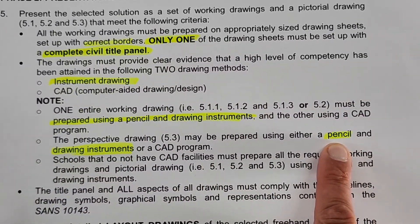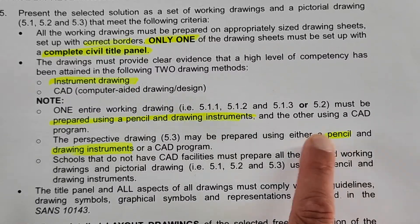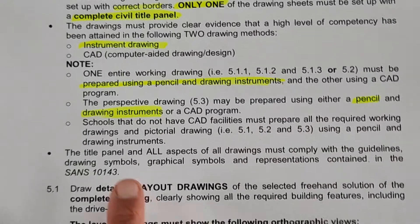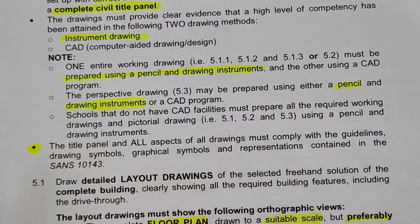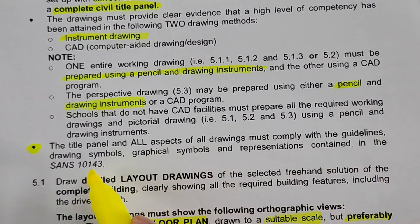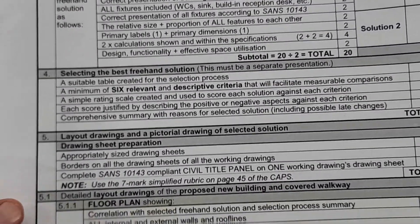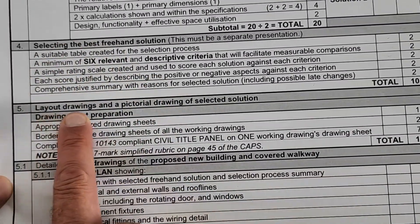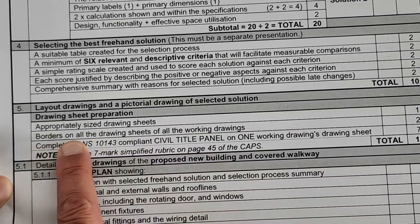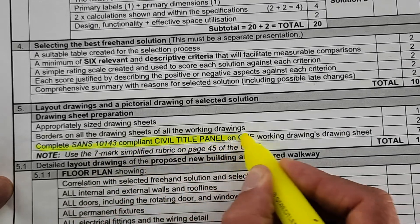We're doing everything in pencil for a couple of reasons: we don't have CAD at the school, and secondly, what are you going to get in the final exam? A pencil exam. Schools that do not have CAD must do everything in pencil. The title panel and all aspects of all drawings must comply with the guidelines and drawing symbols. According to our checklist, appropriately sized drawing sheets are A3, you need borders on all sheets, and one drawing sheet must have a complete civil title panel.